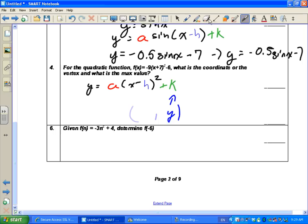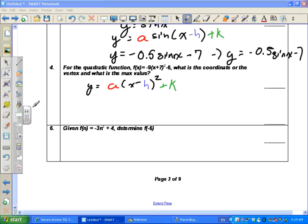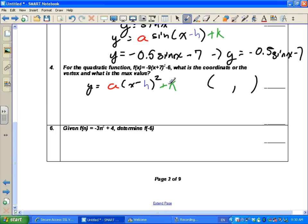So our y value of the vertex is the exact same number as k. So in this instance, our k is negative 6. So our y value is negative 6. Our x value is the opposite sign of h. So our h value is positive 7. So the actual coordinate of the vertex is negative 7. Our vertex is negative 7 and negative 6. That's one part of the question done. We found the vertex.